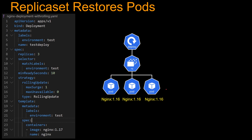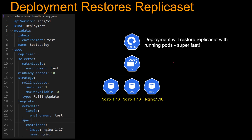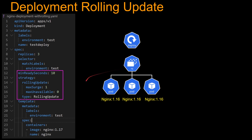So this deployment will create a replica set and then have three pods. Even if one pod goes bad or becomes unavailable, this replica set always has to keep three pods up and running. It will create another pod and remove the bad pod. Just like replica set restores pods, deployment restores replica set. If you try to delete this replica set or it goes bad, the deployment will restore the replica set with running pods super fast — we're going to see this in a demo. If you try to delete this replica set, it will come back within a second.